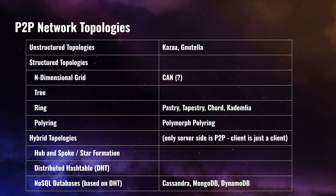There are three major categories of peer-to-peer network topologies: the unstructured topologies, the structured topologies, and the hybrid topologies. I will talk a little bit about each of these categories.